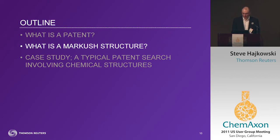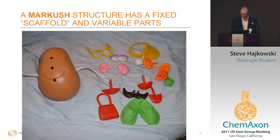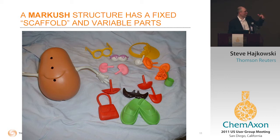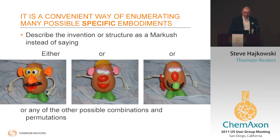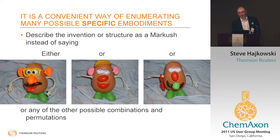So moving on to what is Markush — we've heard a lot about Markush over the last few days. What is a Markush structure is what we'll cover next. There's a kind of analogy here: there's a 'potato man' on the left-hand side with a lot of different things that you can plug into it, and that's analogous to a Markush structure. The Markush structure would have a core scaffold, and then the text of the patent would describe a number of different variable parts which would be attached into that core structure, giving rise to different specific compounds.